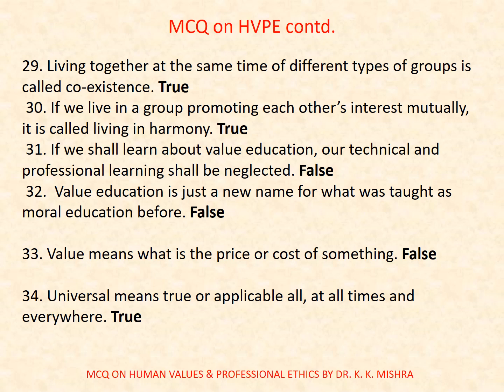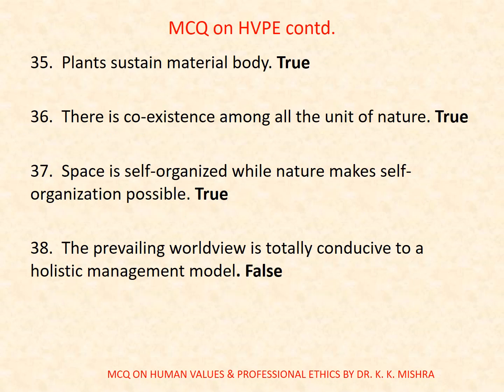Question number thirty-one: If we all learn about value education, our technical and professional learning shall be neglected. False. Question number thirty-two: Value education is just a new name for what was taught as moral education before. False. Question number thirty-three: Value means what is the price or cost of something. False. Question number thirty-four: Universal means true or applicable at all times and everywhere. True. Question number thirty-five: Plants sustain the material body. True. Question number thirty-six: There is coexistence among all the units of nature. True.